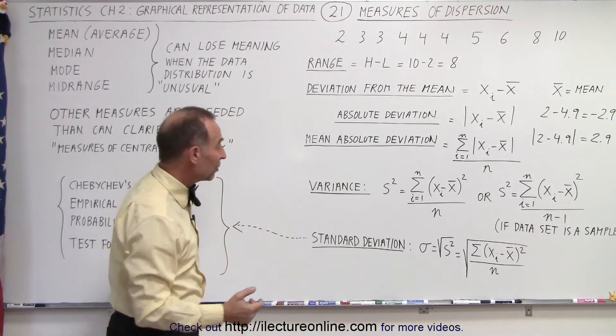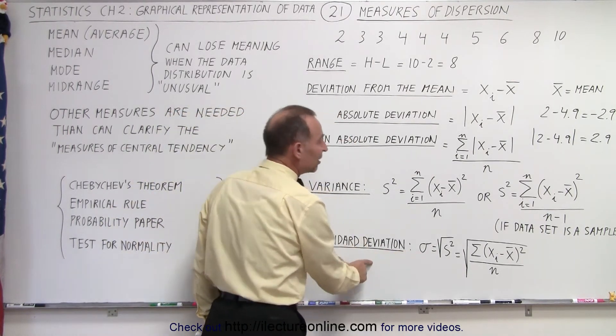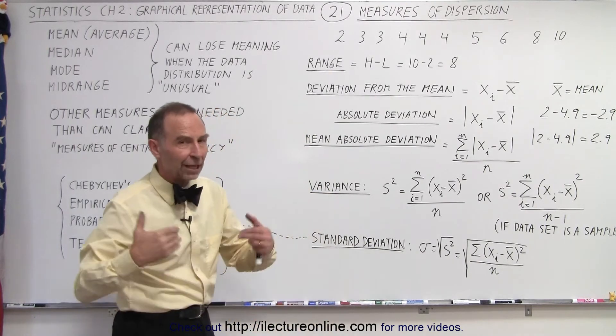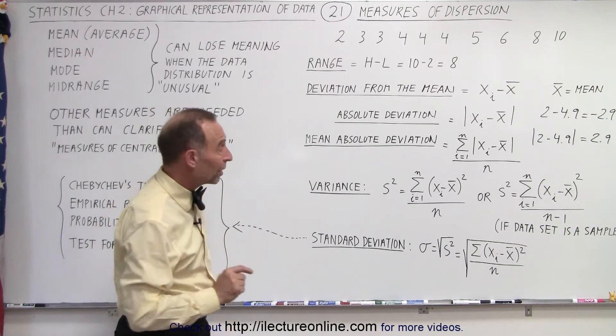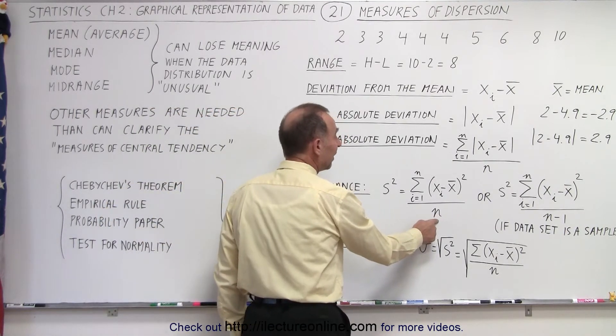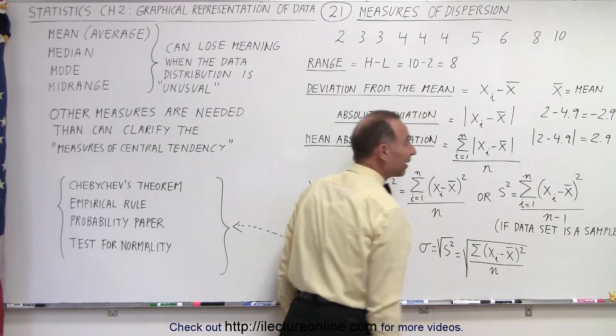And finally, we take the square root of the variance. That gives us the standard deviation. Obviously, we're going to get much more into detail on all these various things. Notice this one important difference. Here we're dividing by n and here we're dividing by n minus 1. Why is that?